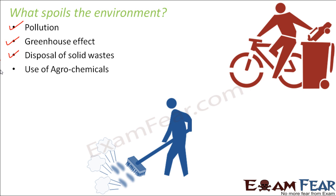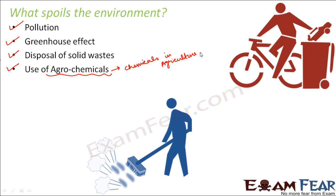Use of agrochemicals — that is, the use of a lot of chemicals in agriculture — is another factor. These days, in order to increase crop productivity, we apply many chemicals like insecticides and pesticides so that crops grow faster. While we are able to increase productivity, the quality of the crop is decreasing, and that is also affecting us indirectly.